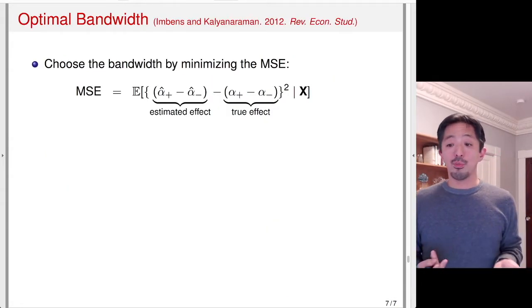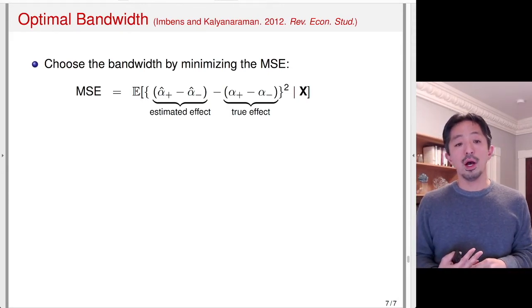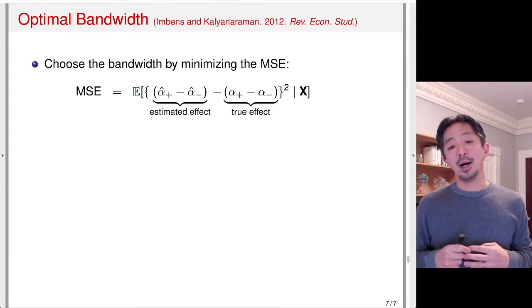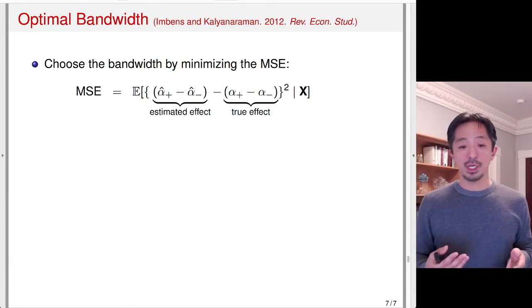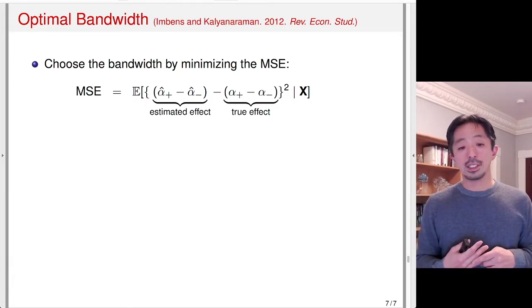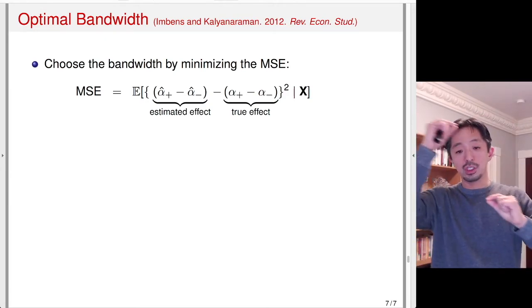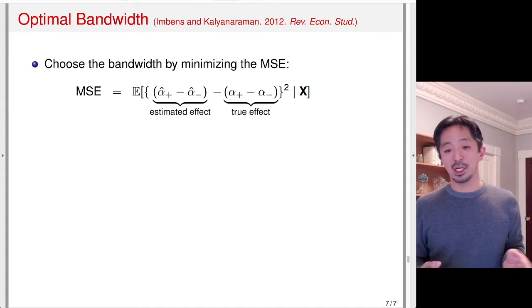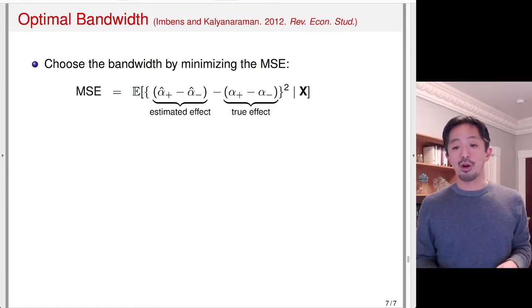There's important work that's been done in the last eight years or so on something called optimal bandwidth. We choose the bandwidth parameter h such that we minimize the mean squared error of the estimate. The mean squared error here is the square of the difference between the estimated effect — the difference between the two intercepts from the two regressions — and the true effect, which is alpha-plus minus alpha-minus.